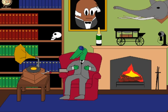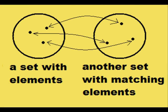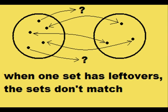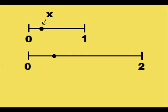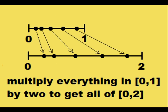Quick review: for one set to be the same size as another set, there must exist a 1-to-1 ratio between the elements of each set, and there can't be any elements left over in either set. Those who have taken some sort of number analysis class have probably seen how if you let an element in [0,1] be x and multiply x by 2, you get an element in [0,2]. Furthermore, if you take all elements in [0,1] and multiply them by 2, you get the entire set [0,2] with no stray elements left over.